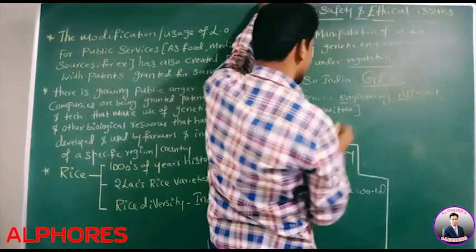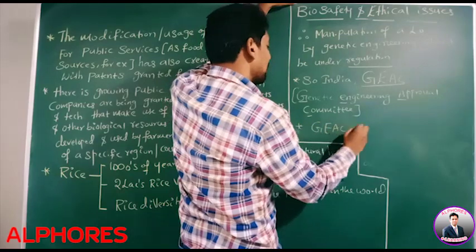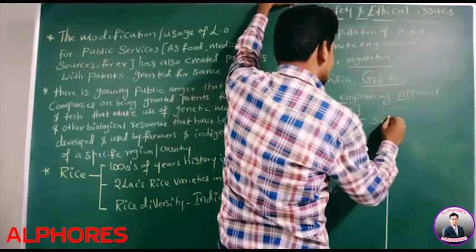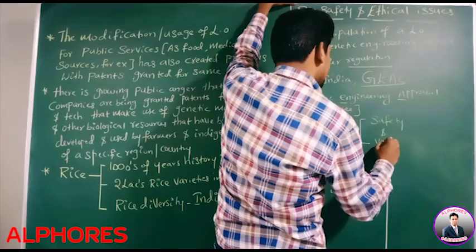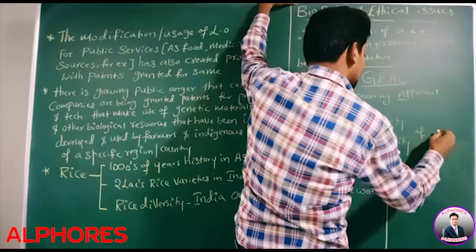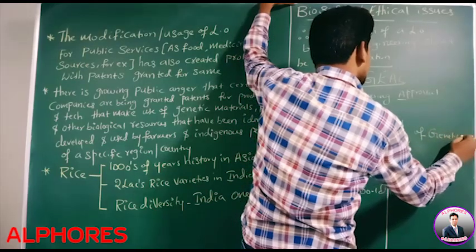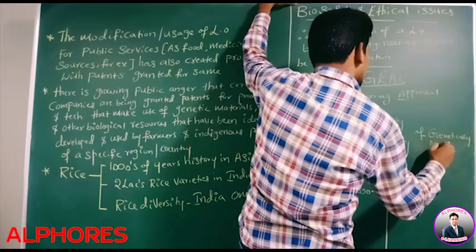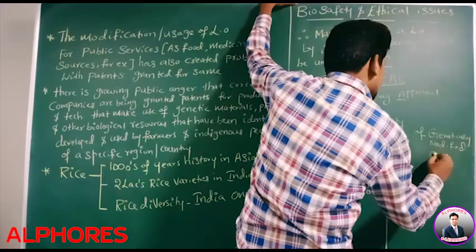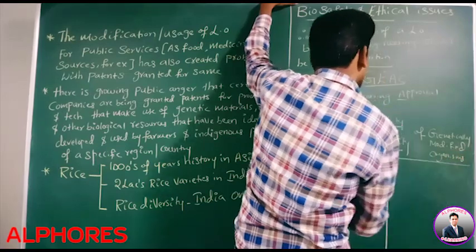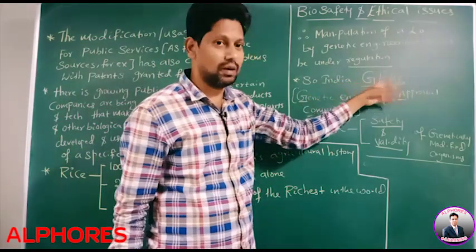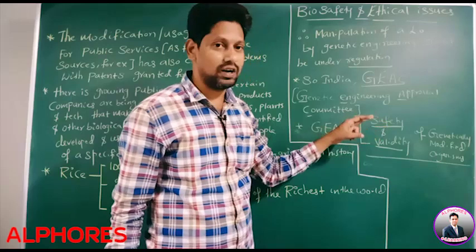The Genetic Engineering Approval Committee is concerned with the safety and validity of genetically modified organisms. All decisions about to what extent an organism should be manipulated by the genetic engineering process are made by this committee. This full form — Genetic Engineering Approval Committee — is important.